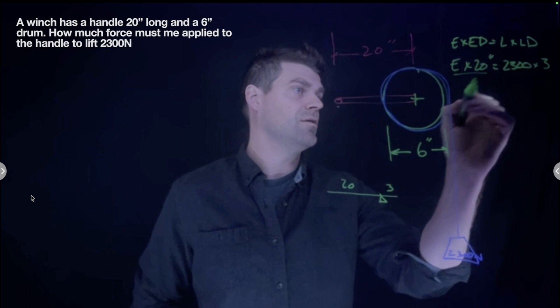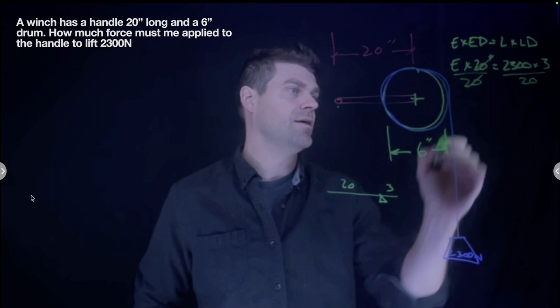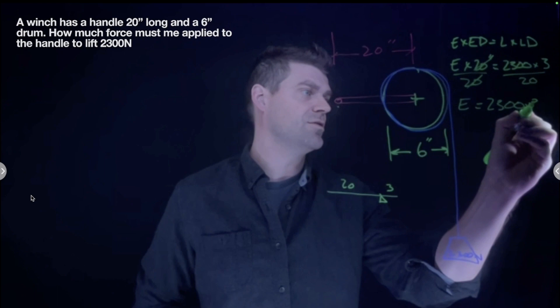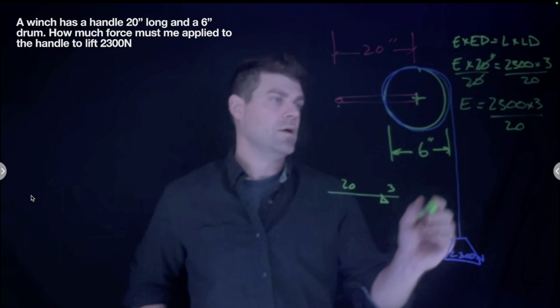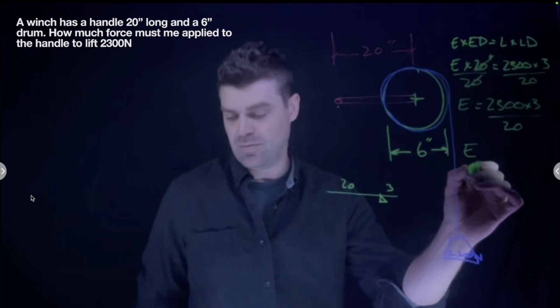Transposing — dividing both sides by 20 — we get: Effort = (2300 × 3) ÷ 20. That gives us an effort of 345 newtons that we need to apply to the handle.